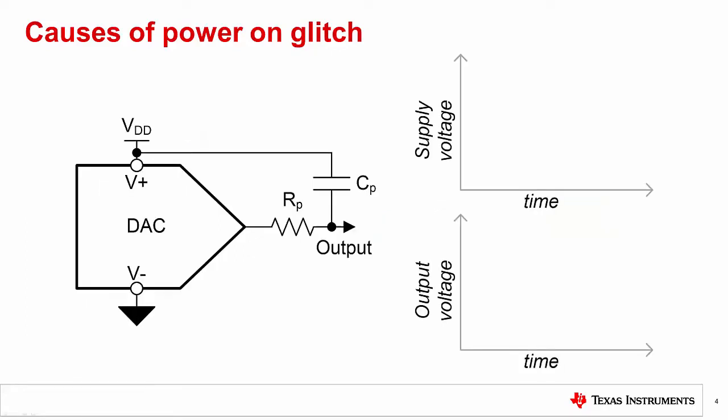While the output stage is the primary contributor to power-on-glitch, some glitch energy can be attributed to the capacitive parasitics. Consider stray capacitance that couples the output of the DAC to the supply, which is isolated by a series contact resistance. When the VDD supply ramps quickly, this acts as an AC transient, which will couple to the output. This contribution is generally less than glitch from the PMOS output stage, but can still be noticeable in some designs.